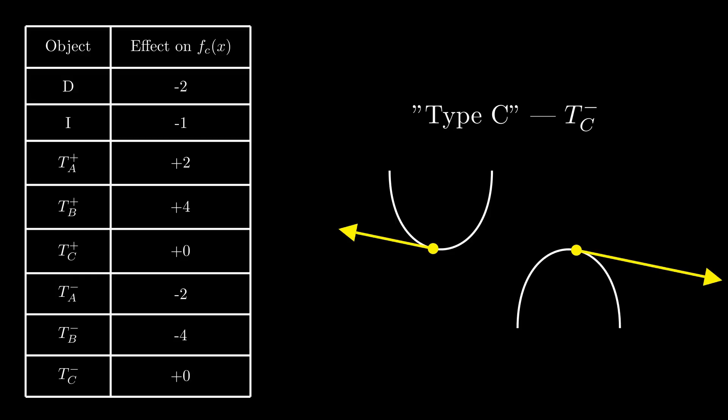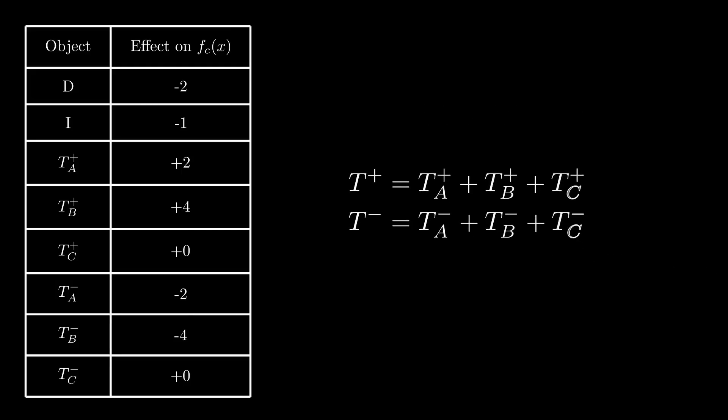It may seem a bit concerning that we're classifying bitangents into three different types, whereas our target equation doesn't do this at all. What I'll leave you with is that the total number of bitangents, that is, either T-plus or T-minus, is the sum of all the type A, type B, and type C bitangents. You know, since any bitangent has to be one of those types. This is a fact we'll use at the end to clean up the types.